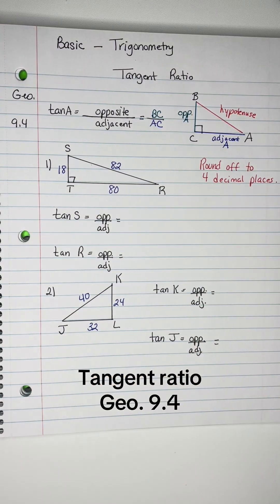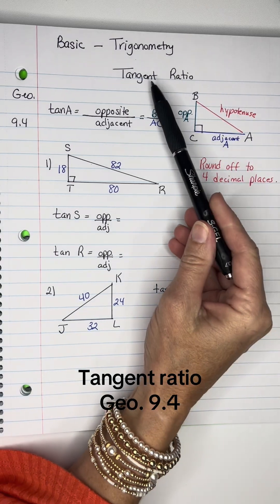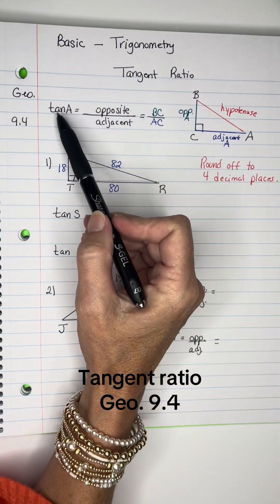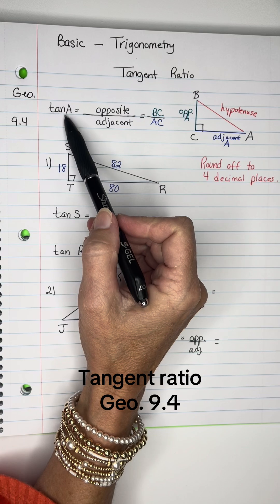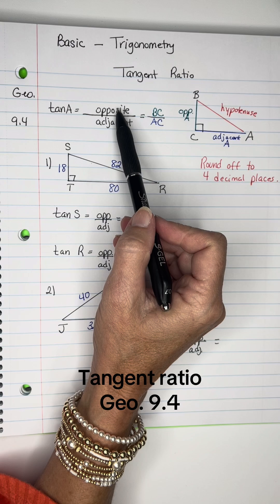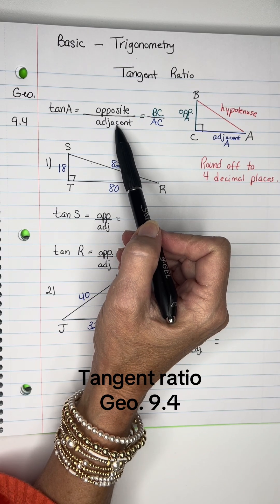This video covers basic trigonometry, starting with the tangent ratio. Tangent is abbreviated tan of A, where A refers to the angle we're examining. You calculate it by dividing the opposite leg by the adjacent leg.